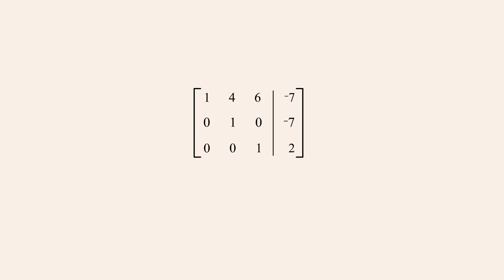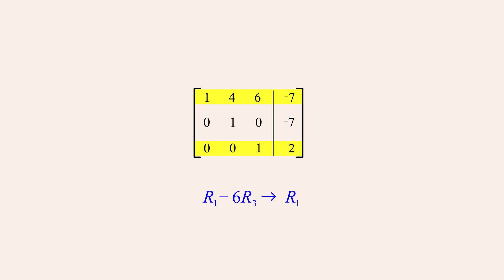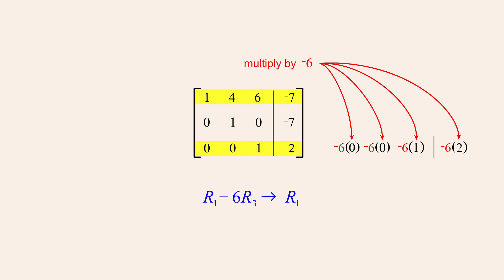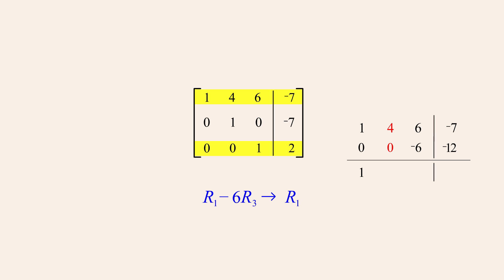Now that the entry above the 1 in the bottom row is zero, the entry above that must also be changed to zero. We can accomplish this by using another pivot operation to add negative 6 times row 3 to row 1, replacing row 1. We notate this by writing R₁ minus 6 times R₃, followed by an arrow and R₁. Multiplying row 3 by negative 6 and adding that multiple of row 3 to row 1, we replace row 1 with the result.